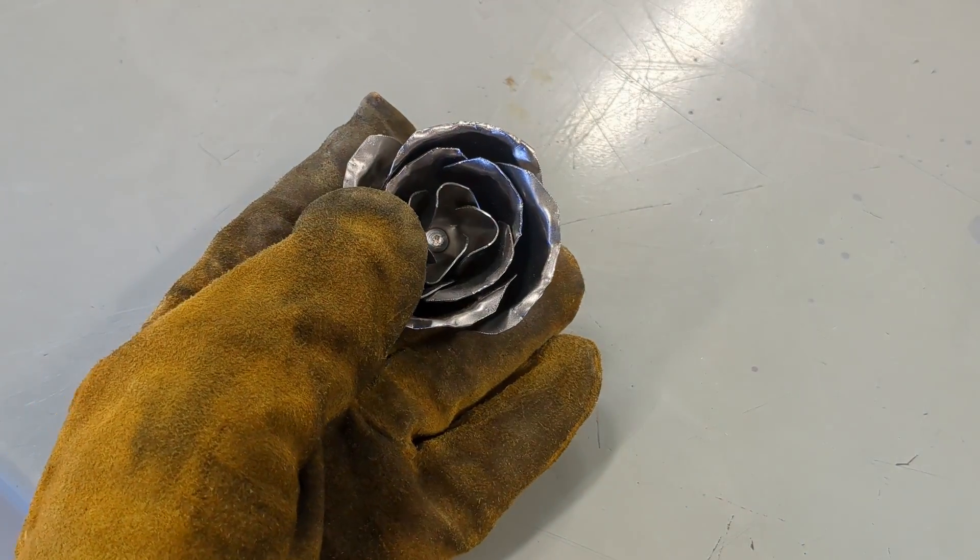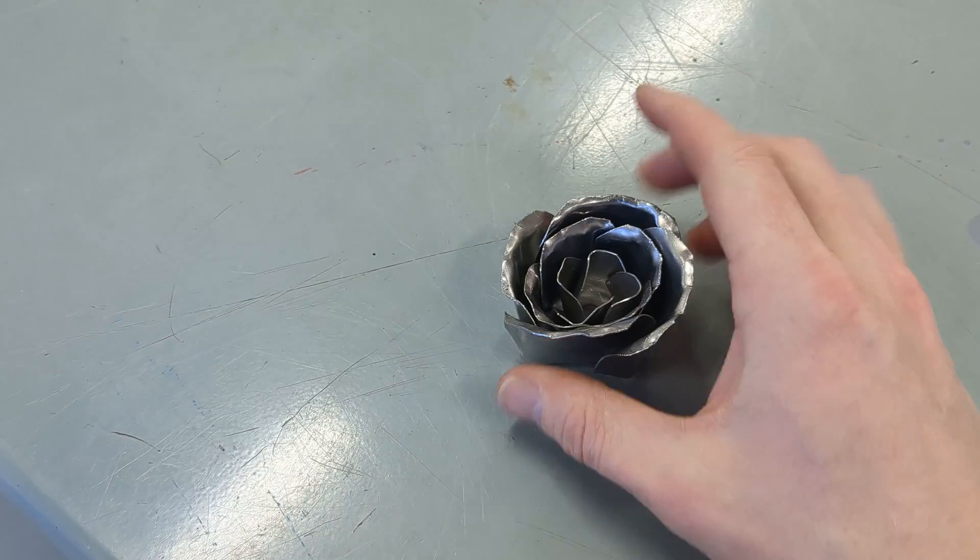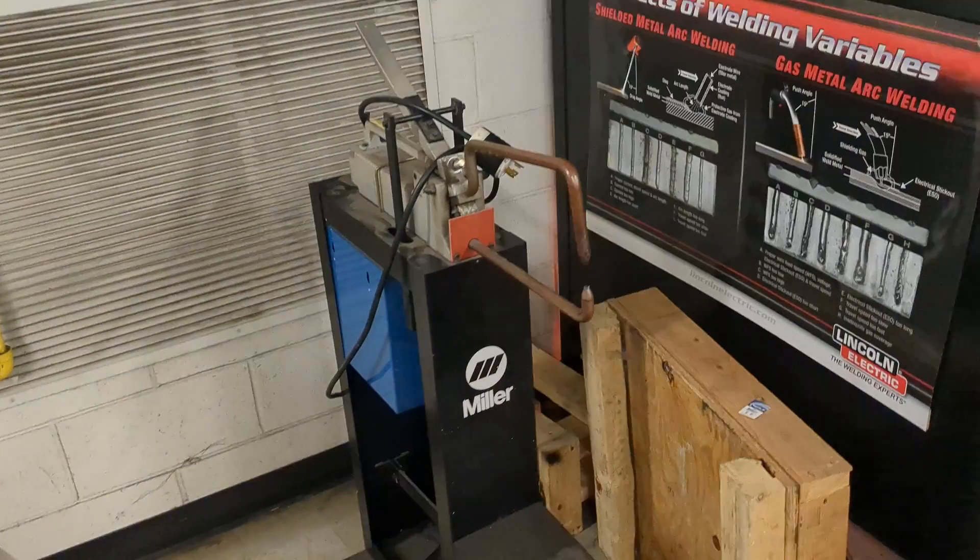And with that, the flower is done. All right, if you don't have a spot welder, you can try joining your parts together with one of these methods.